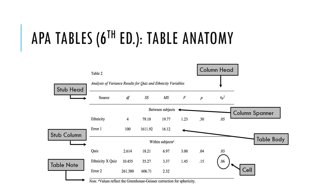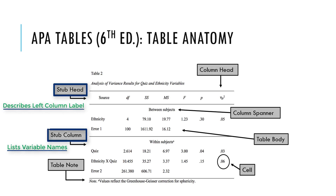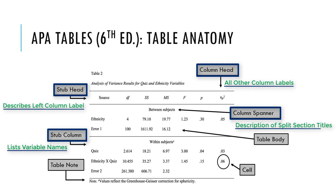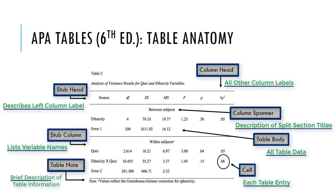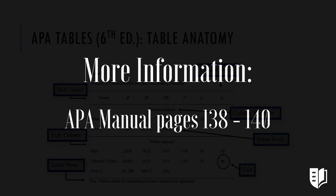Stubs are the far left columns in the table and include labels such as variable names. The stub head describes the label of the far left column, and the stub column lists the variable names. Column heads are the labels for all other columns within the table. The column spanner describes the title for sections of the table that are split. The table body contains all data included in the table, and each entry is called a cell. Finally, the table note is a brief description about the information in the table needed to understand the data presented. You can find more information about table notes on pages 138 to 140 of the APA Manual.